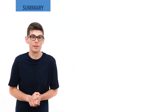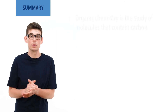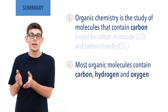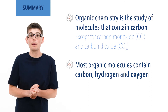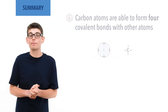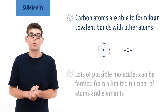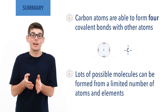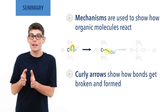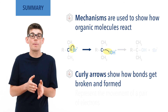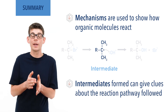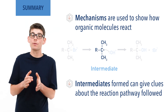To summarise: organic chemistry is considered to be the study of carbon-containing molecules, ignoring carbon dioxide and carbon monoxide. The most common organic substances contain carbon, hydrogen, and oxygen. All other substances and molecules come under the bracket of inorganic chemistry, as in non-organic. Carbon is able to form four covalent bonds with other atoms, meaning there are lots of possible structures and substances that can be formed from only a limited number of elements and atoms. Mechanisms are used to show how organic molecules react, and curly arrows are used to show how bonds between atoms get made and broken, representing the movement of a pair of electrons. Structures formed during reactions called intermediates can give us useful information about the pathway a reaction follows, and mechanisms are often based around the structures of intermediates.